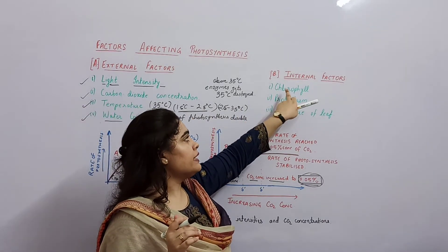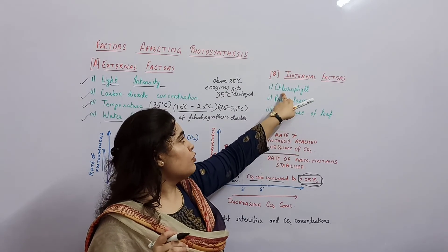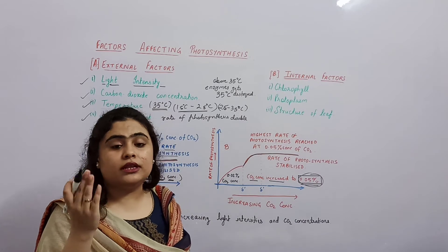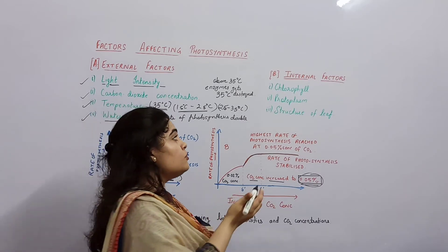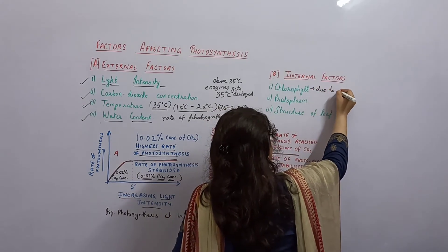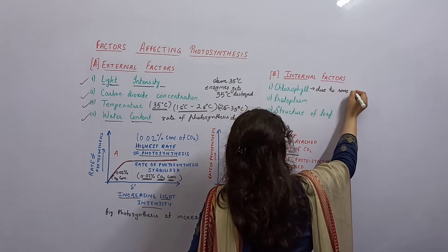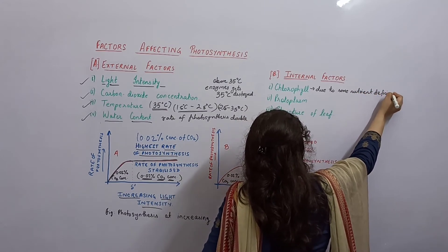Now internal factors. What are internal factors? Chlorophyll, protoplasm, and structure of leaf. Chlorophyll - the more chlorophyll present, the more photosynthesis will occur. But due to some mineral deficiency or nutrient deficiency, what happens? Chlorophyll is lost.